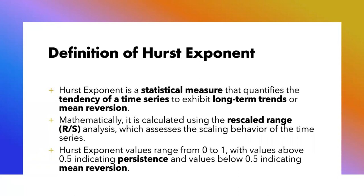Mathematically, the Hurst Exponent is calculated using the rescaled range analysis, which assesses the scaling behavior of the time series — and we will get to that in the next slide. The Hurst Exponent is a value ranging between 0 and 1, with values above 0.5 indicating persistence and values below 0.5 indicating mean reversion.